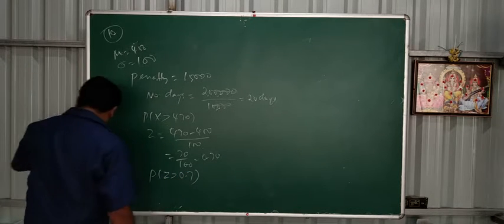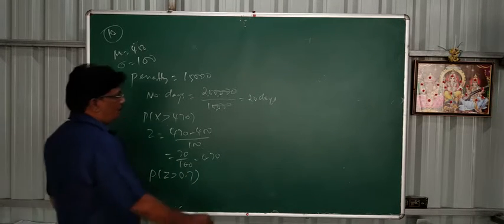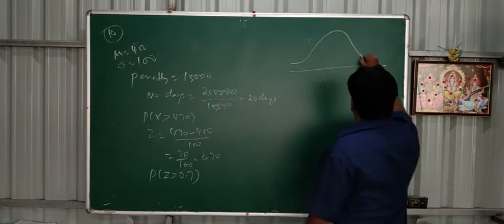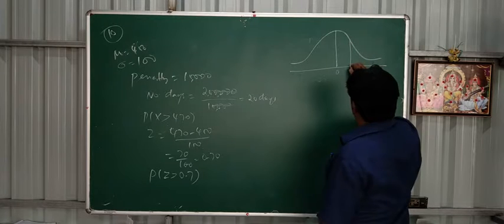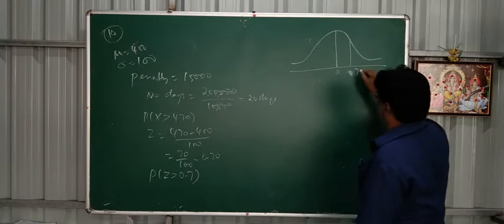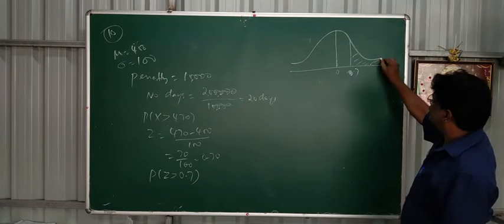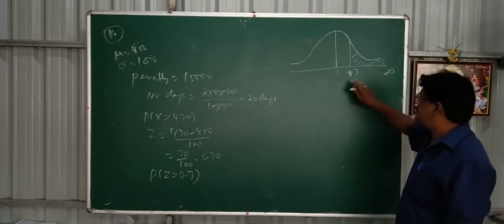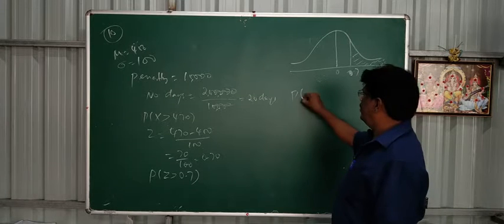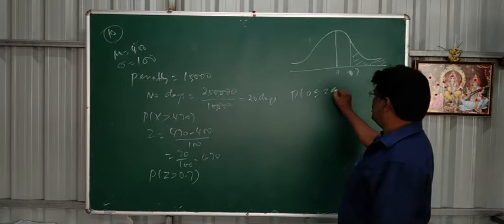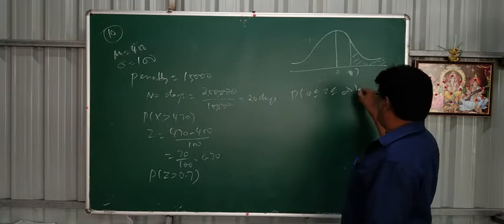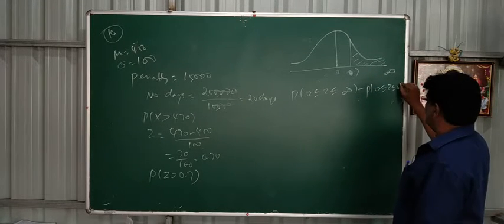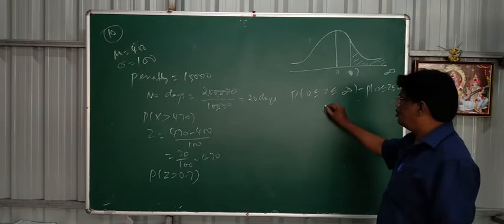Now we can see the bell shape diagram. Center 0, 0.7. Now we can see the area: 0 to infinity minus 0 to 0.7. P of 0 less than or equal to Z less than or equal to infinity minus P of Z less than or equal to 0.7.